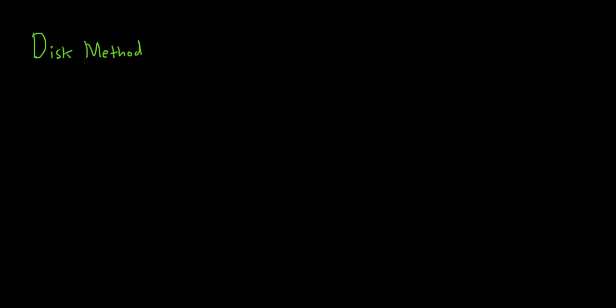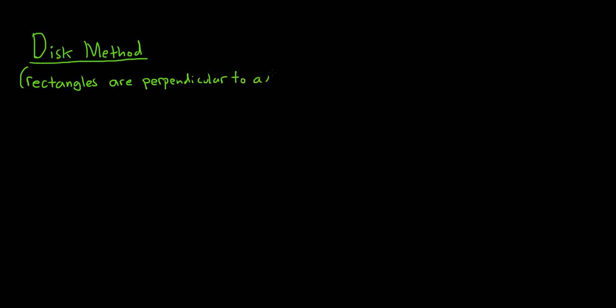The first method we'll talk about is the disk method. When I say disk method, I also mean the washer method — a washer is a disk with a hole, so it's pretty much the same thing. The first thing you should know with the disk method is that your rectangles are always perpendicular to your axis of revolution. This is absolutely critical; I cannot emphasize how important this is.